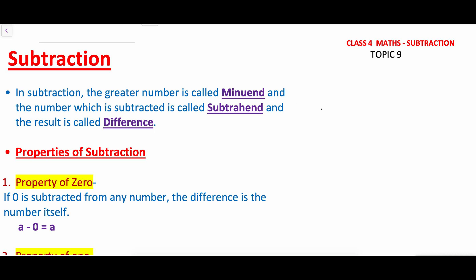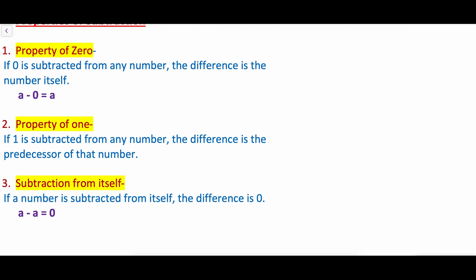For example, 25 minus 15 is equal to 10. So the greater number from which we are subtracting is called the minuend, the smaller number which is subtracted is called the subtrahend, and the result is called the difference. Now let's see the properties of subtraction. Property of 0: if 0 is subtracted from any number, the difference is the number itself.